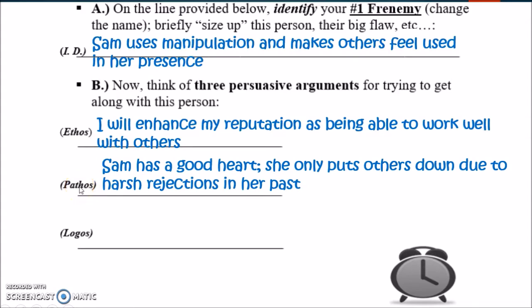Pathos — an argument based on emotion: 'Sam has a good heart. She only puts others down due to harsh rejections in her past.' Notice this is very personalized for the student and hasn't really been generalized to a wider audience — which is something I would give feedback on, to make it accessible to a general audience. But this is based on emotion — maybe not to judge others so harshly just because of the way they were treated in the past.